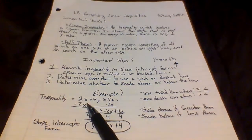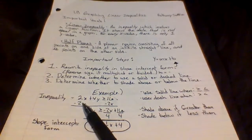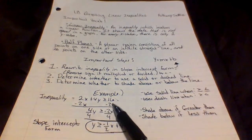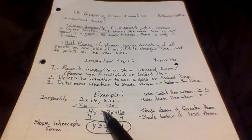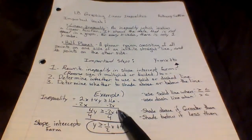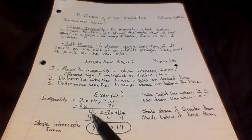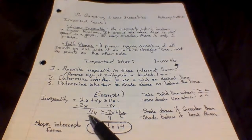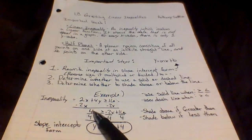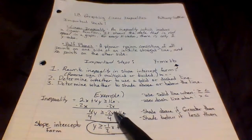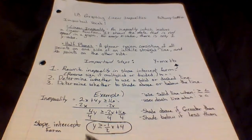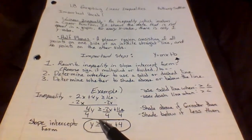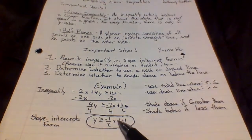To convert to slope-intercept form, I subtract 2x from both sides — this cancels on the left. I'm left with 4y is greater than or equal to negative 2x minus 16. Then I divide everything by 4: 4 divided by 4, negative 2x divided by 4, and negative 16 divided by 4. I end up with y is greater than or equal to negative one-half x plus 4.